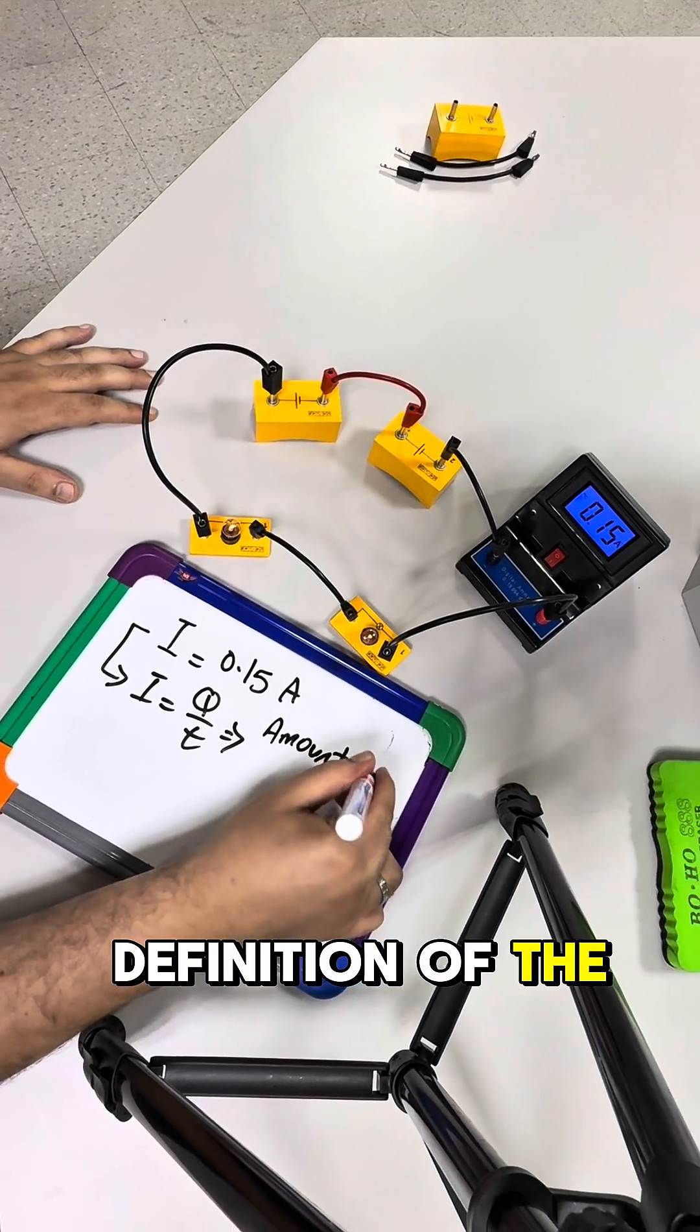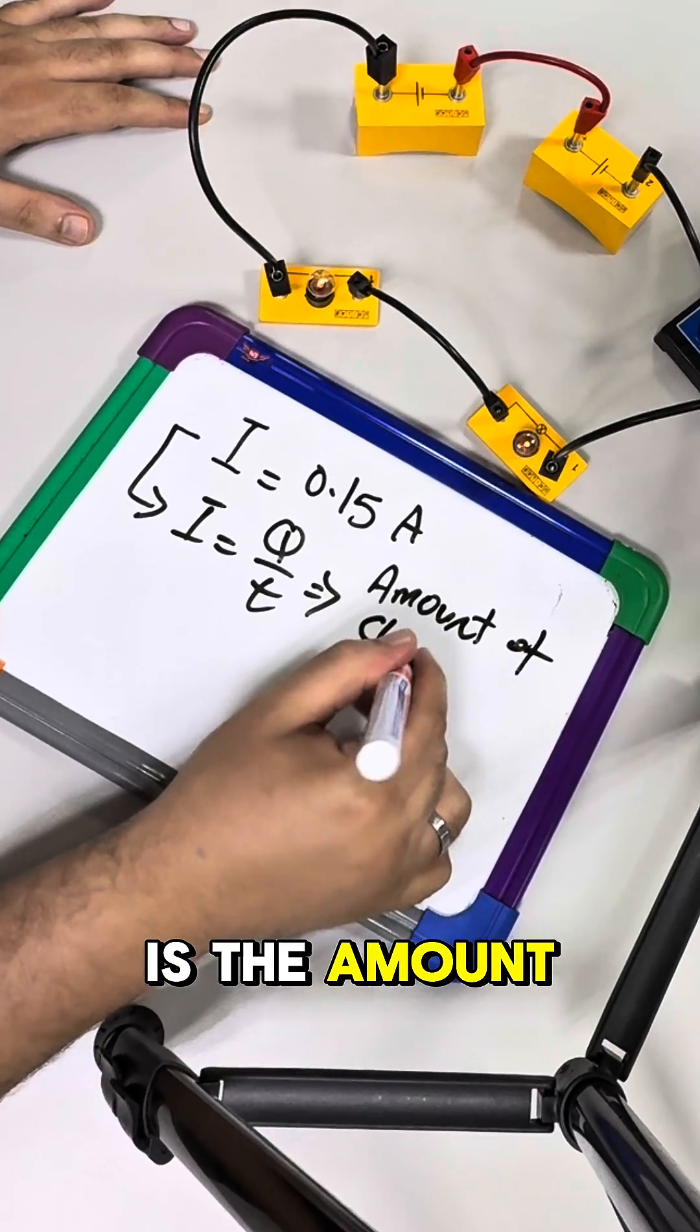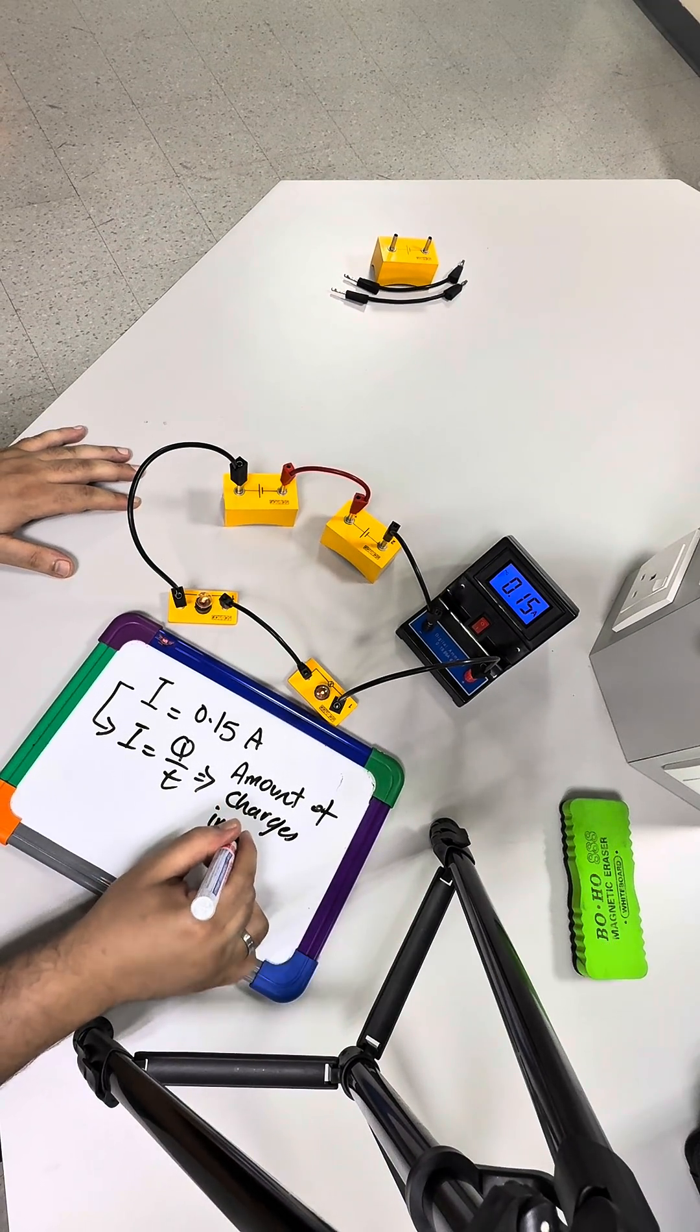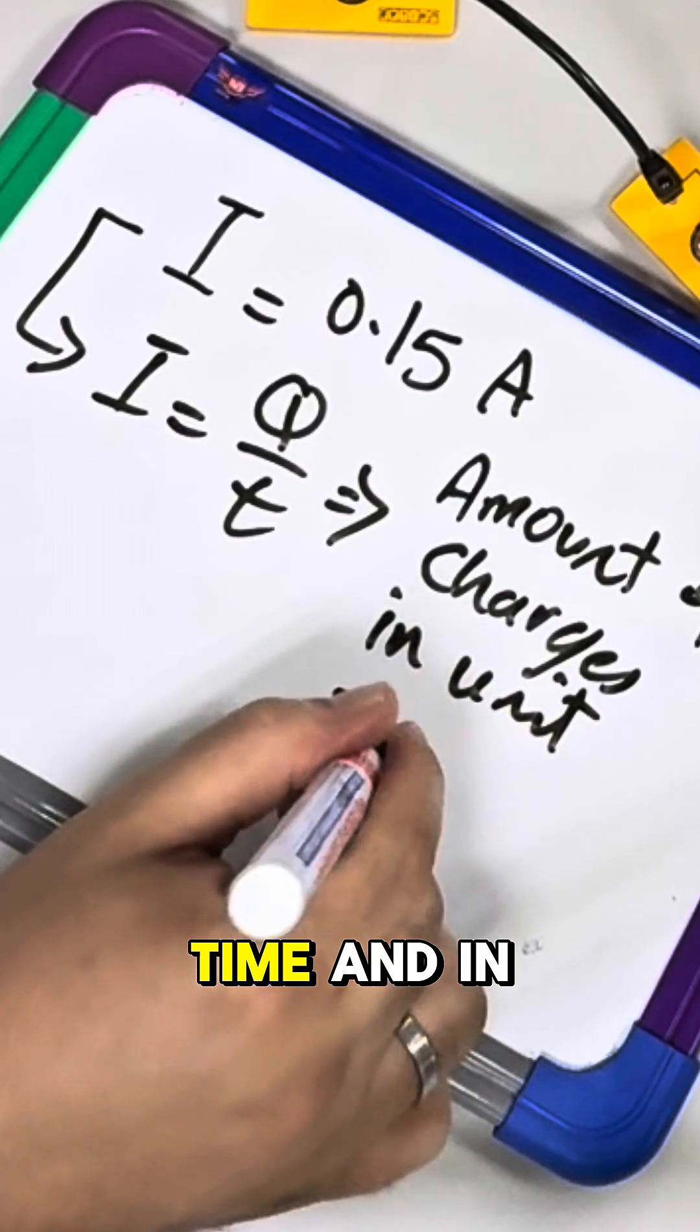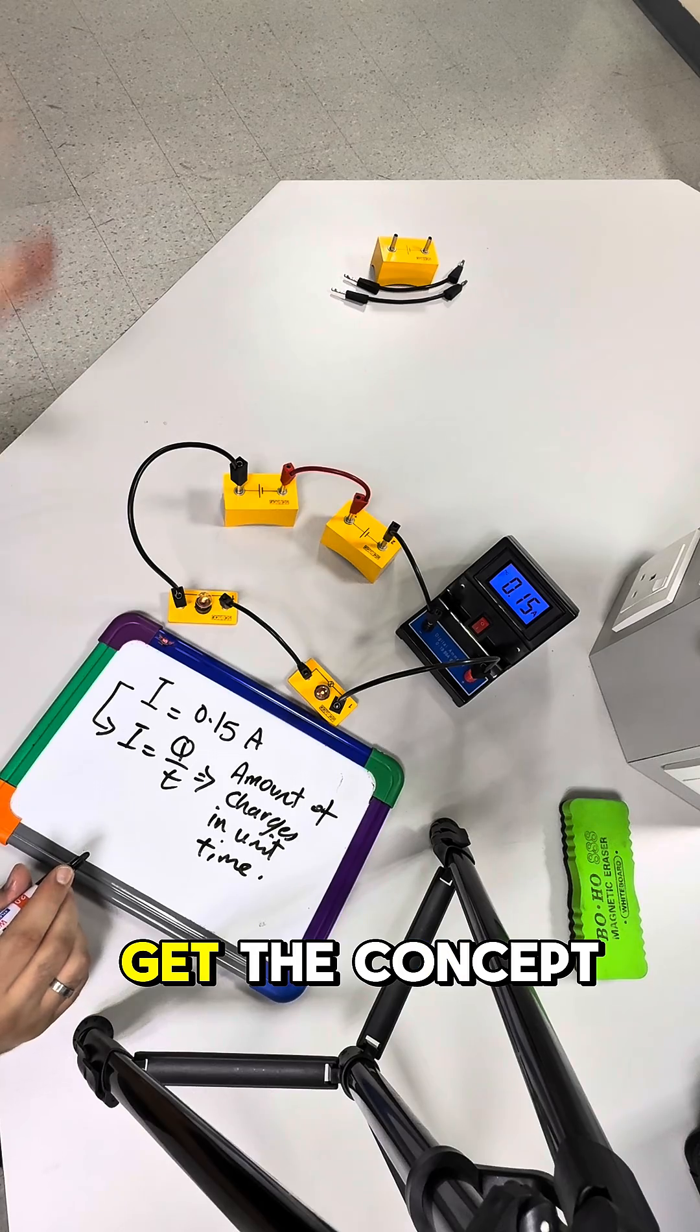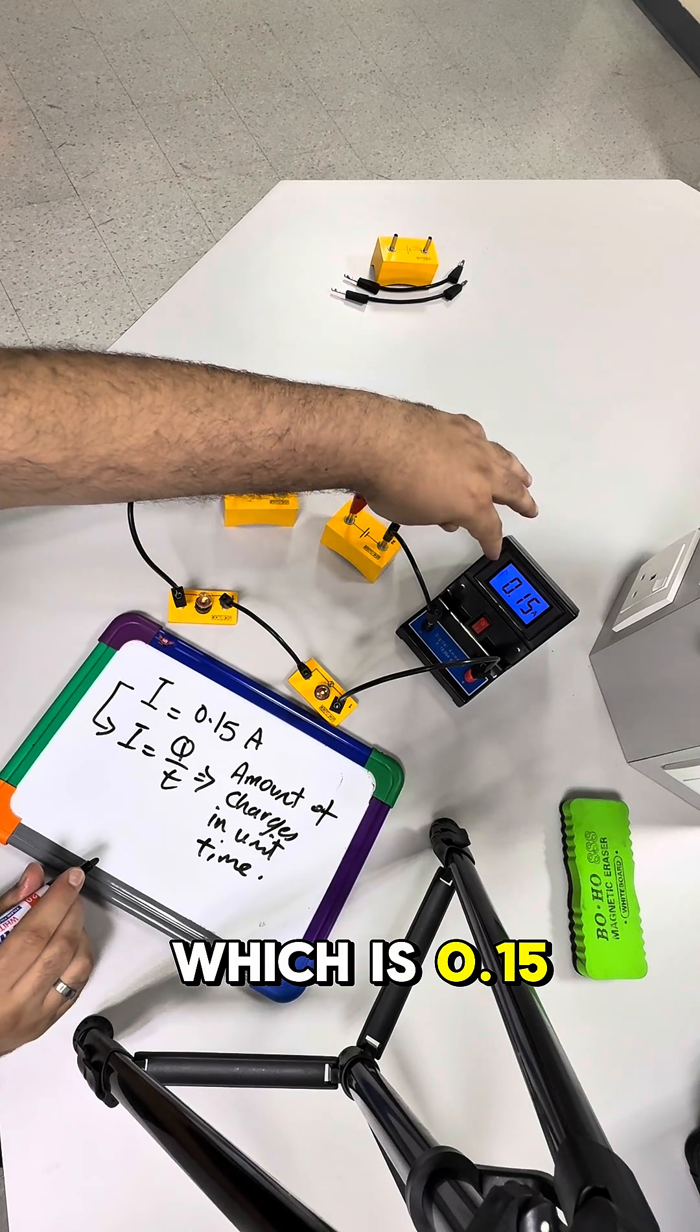This is the definition of the electric current: the amount of charges passing through the wire in unit time. And in this case, I get the concept which is 0.15 ampere.